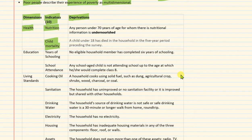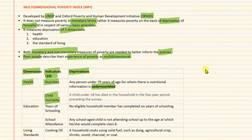For the nutrition indicator, deprivation will be counted if a person under 70 years of age, for whom nutrition information and data is available, is undernourished — then he or she will fail on the nutrition indicator of the health dimension. An important point is that MPI is calculated at the household level. Unlike earlier estimates like the Tendulkar estimate, which was a monetary line per person per day, MPI looks at the household.